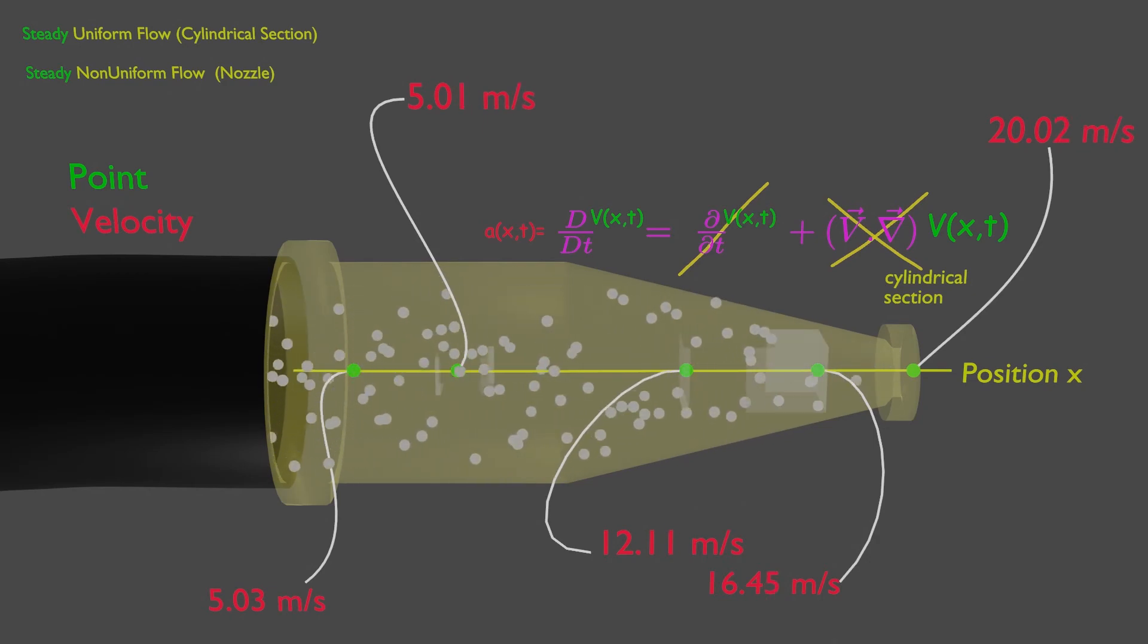Now note that while the flow is steady from the point of view of a fixed observer in the Eulerian reference frame, it is not steady from the Lagrangian reference frame, moving with a fluid particle that enters the nozzle and accelerates as it passes through the nozzle.